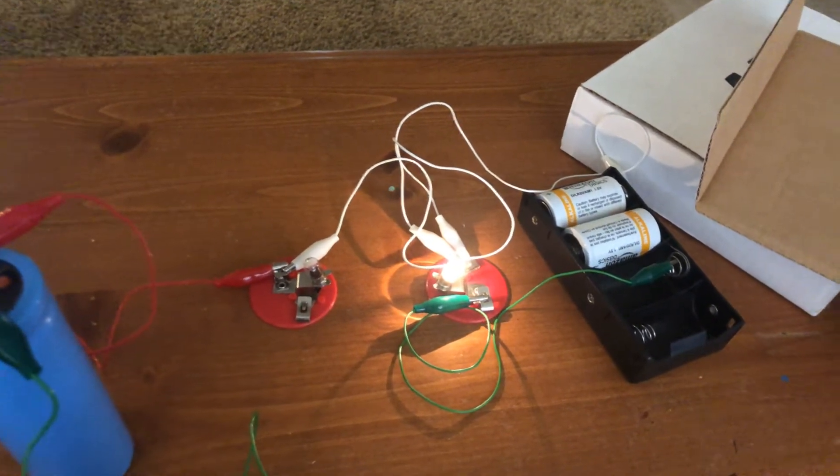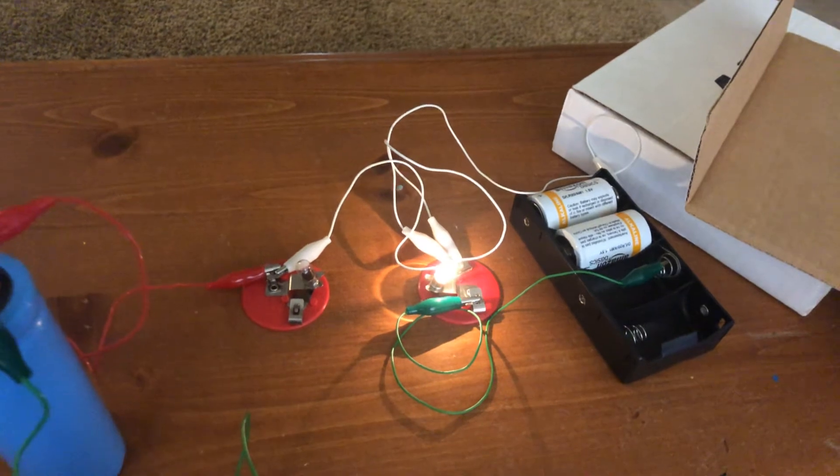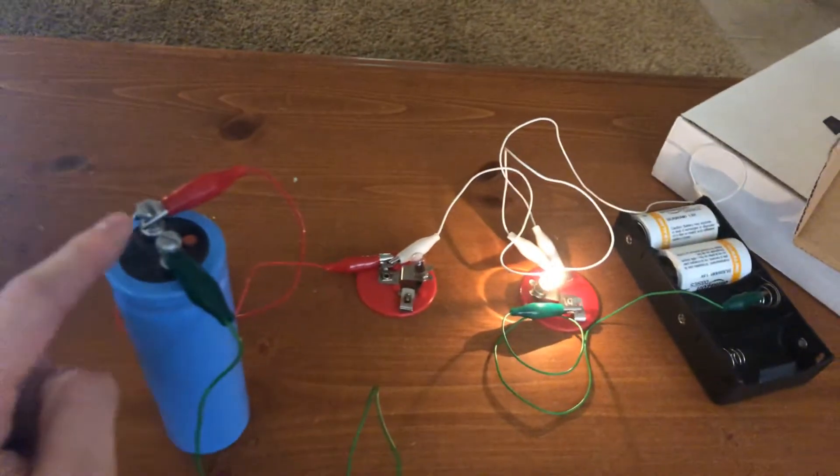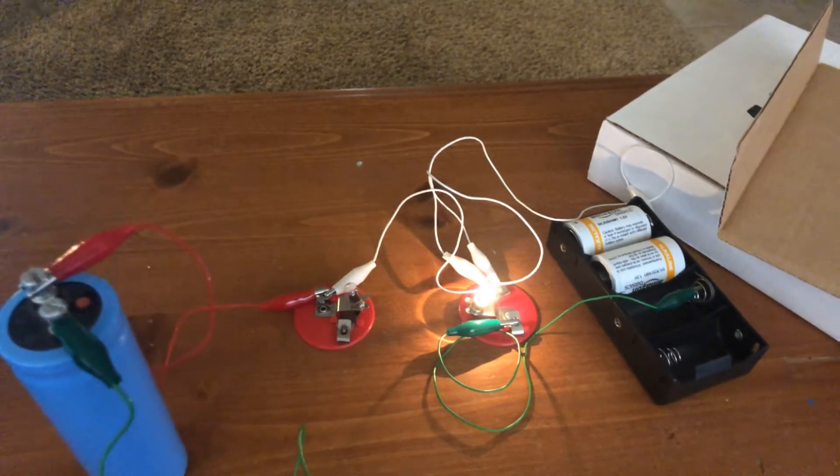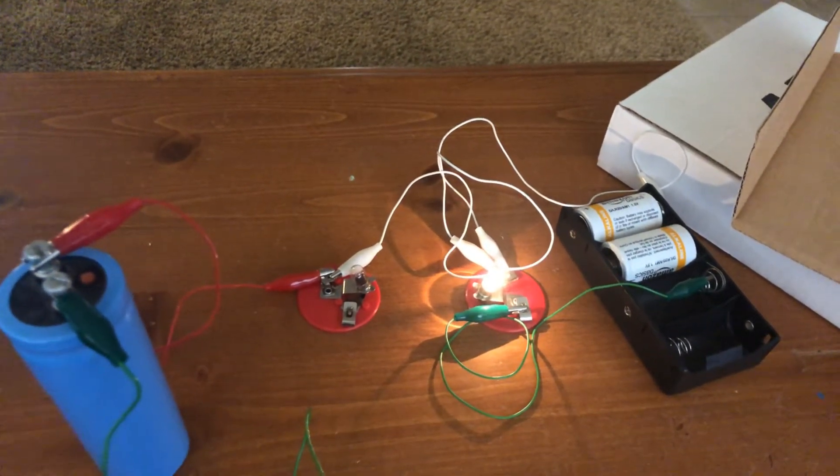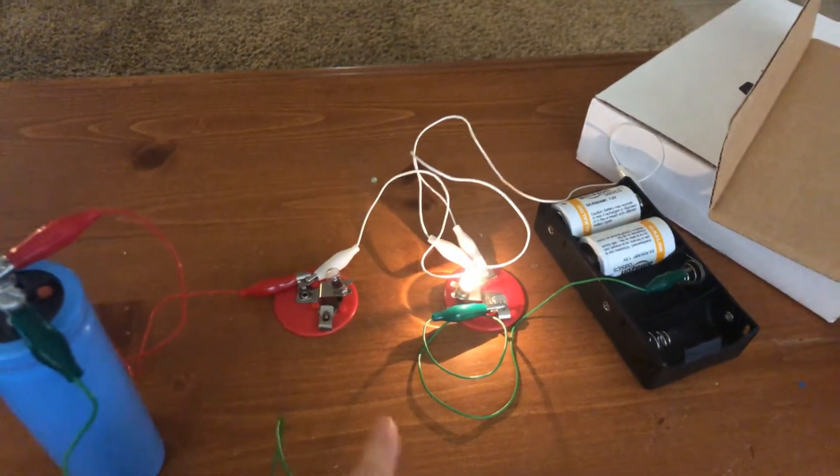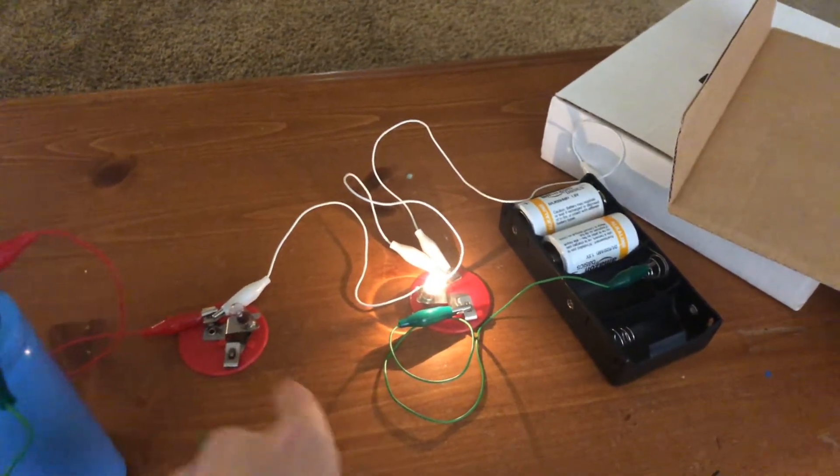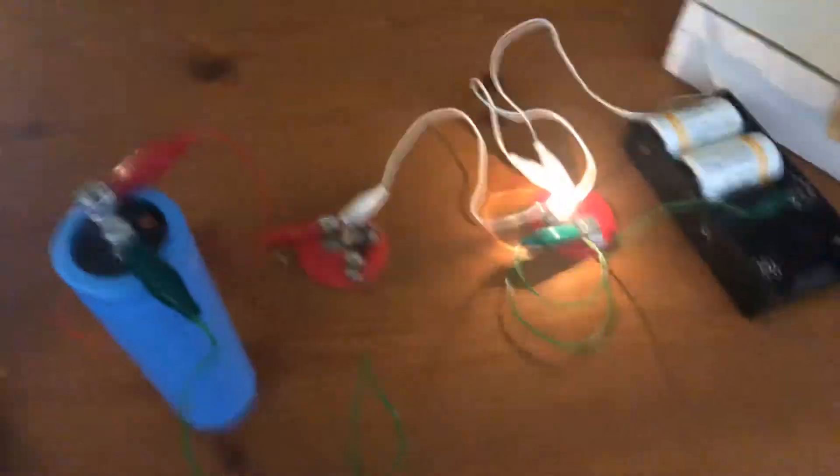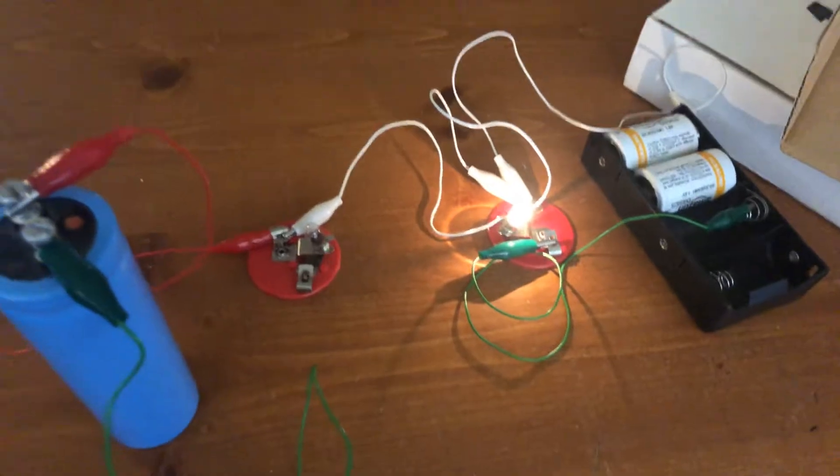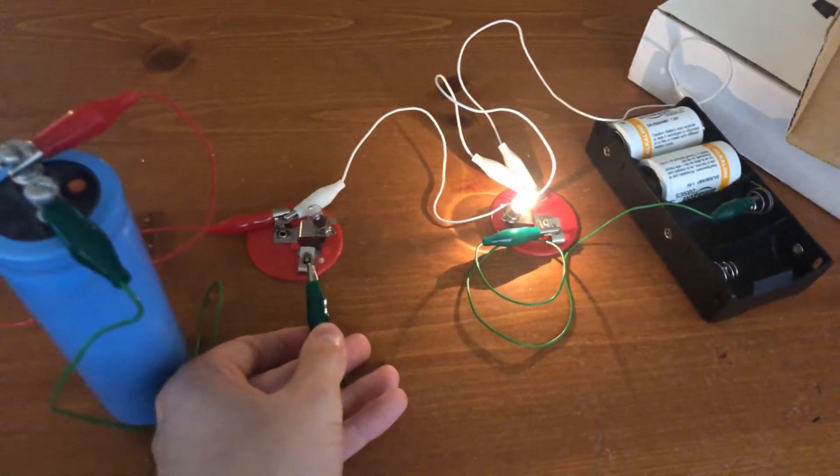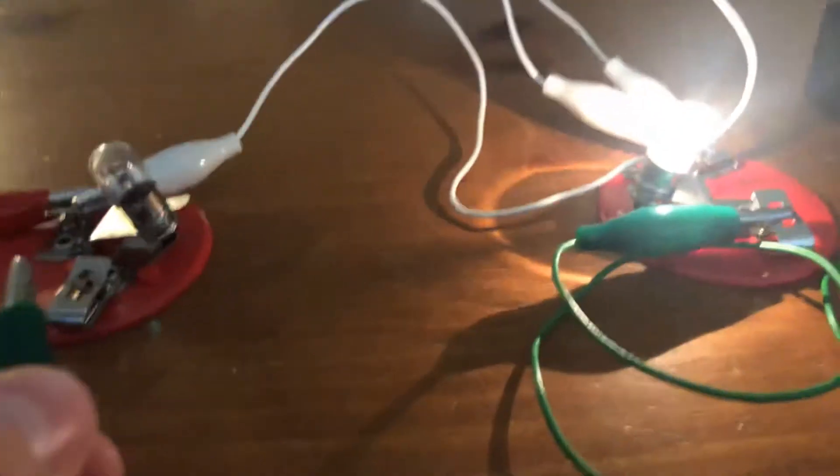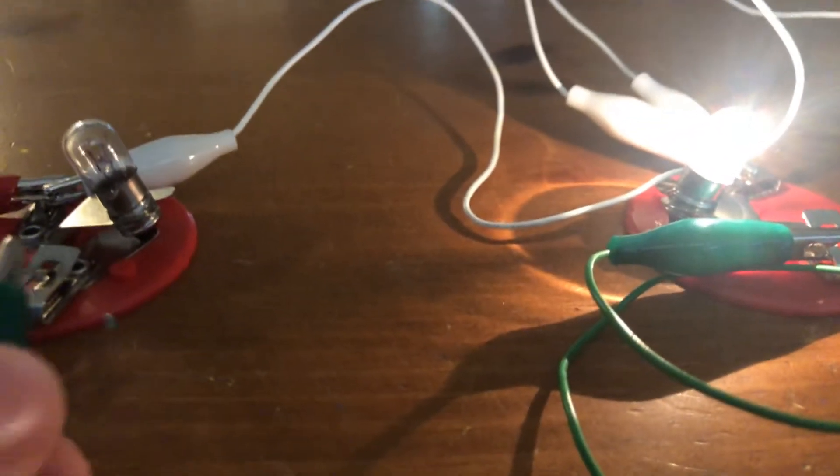It stops charging because the pressure difference across this capacitor is the same as the pressure difference across the battery. Now, if that's the case, and all else is equal, these two circuits are the same. If all that is true, then when I connect this here, we should see these two bulbs as the same brightness.